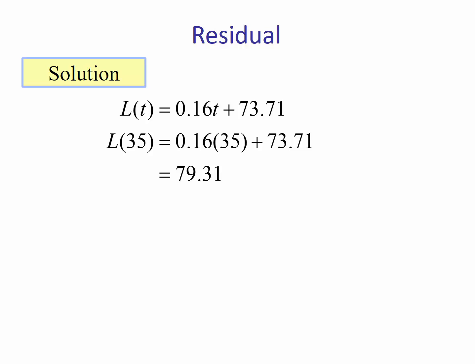This means the model is predicting the age when t is 35 is 79.31. So the residual would be the actual or the observed y-value 78.9 minus the predicted 79.31, and we get negative 0.41.